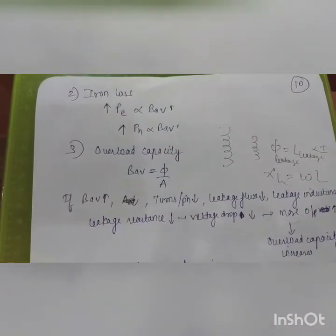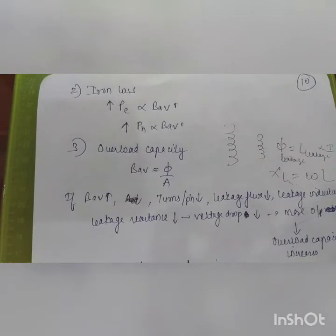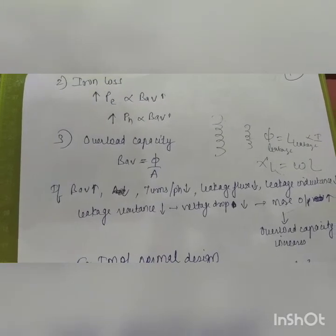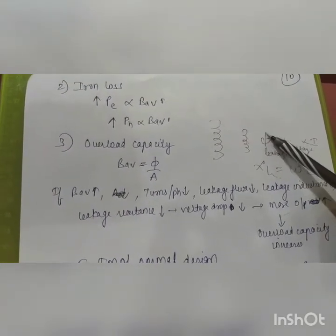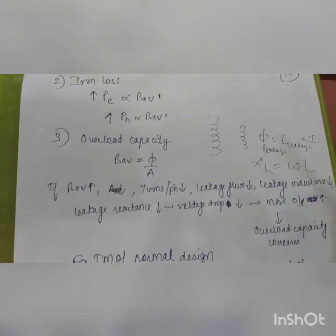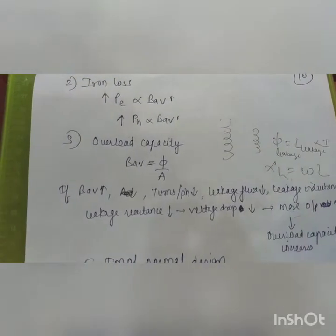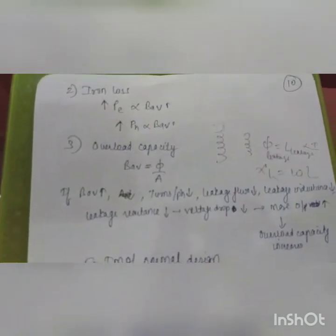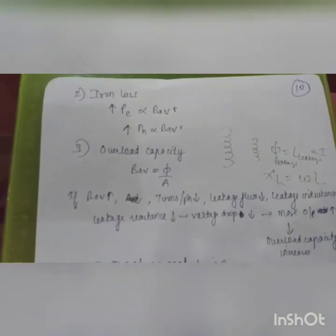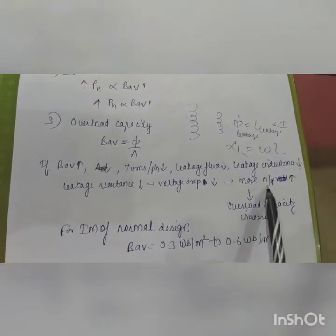With less leakage flux, the leakage reactance is less (since φ = L·I, less leakage means less leakage inductance). A smaller leakage reactance drop means improved voltage regulation, which increases the overload capacity of the induction motor.